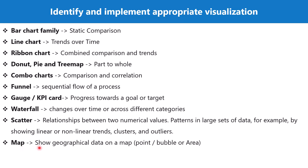Next we have a few map visuals, which are used to show geographical data on a map. You can show geographical data in the form of a point, a bubble, or as a highlighted area. We are going to have a look at the map visuals in another video.